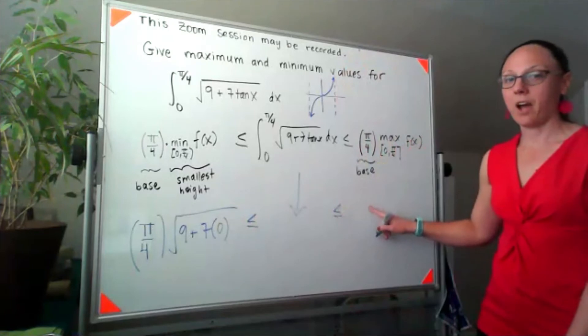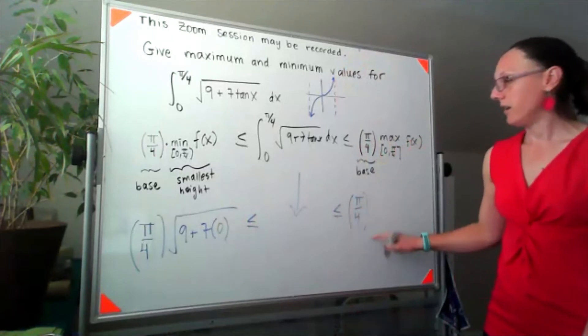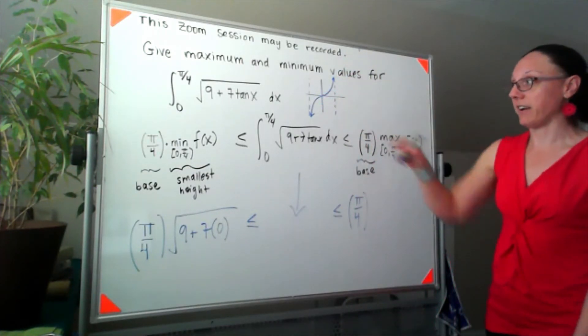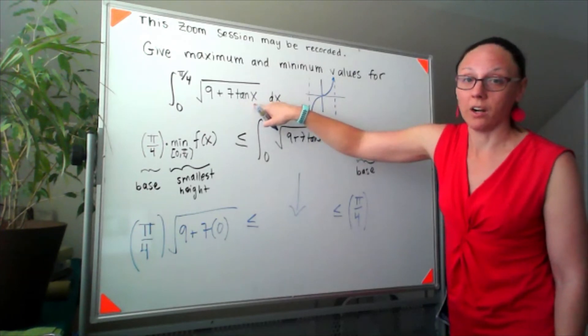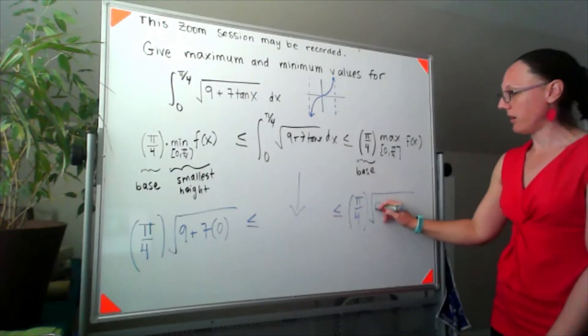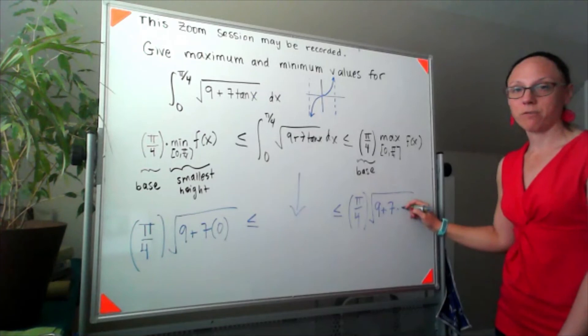And over here at my upper bound, because tangent is strictly increasing on that interval, I'm going to be plugging in pi over four to our function. So I'll have the square root of nine plus seven times tangent of pi over four, and tangent of pi over four is one.